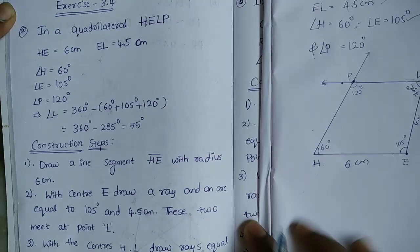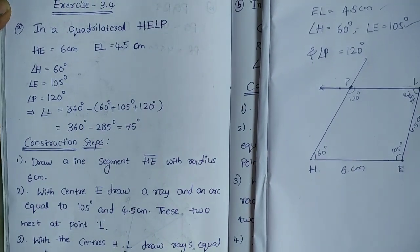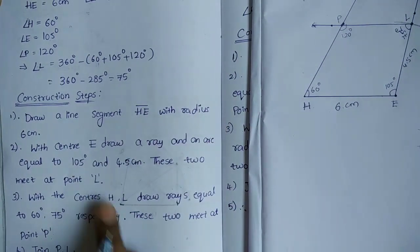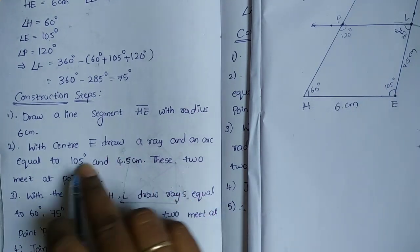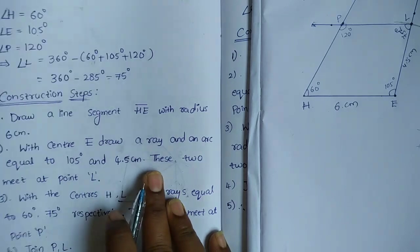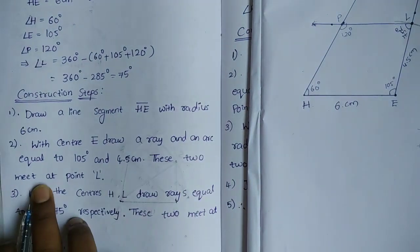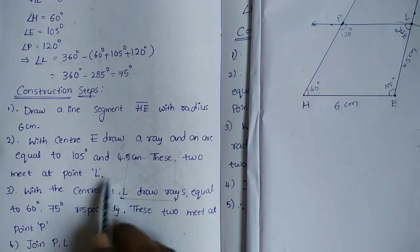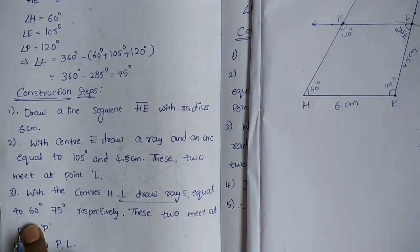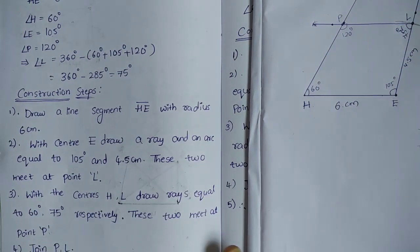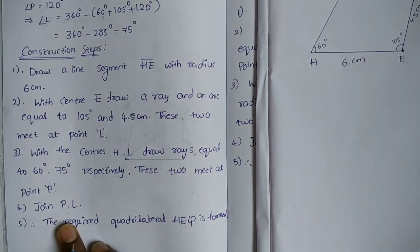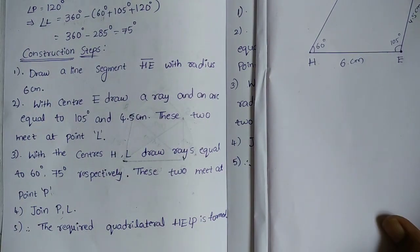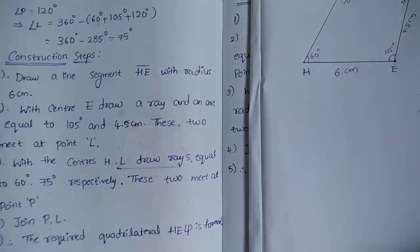Now, here are the construction steps. First, draw the base line HE. Then draw angle E at 105 degrees, draw an arc at EL = 4.5 cm to get point L. Then draw angle H at 60 degrees and angle L at 75 degrees. Join point P and L — the required quadrilateral HELP is formed.